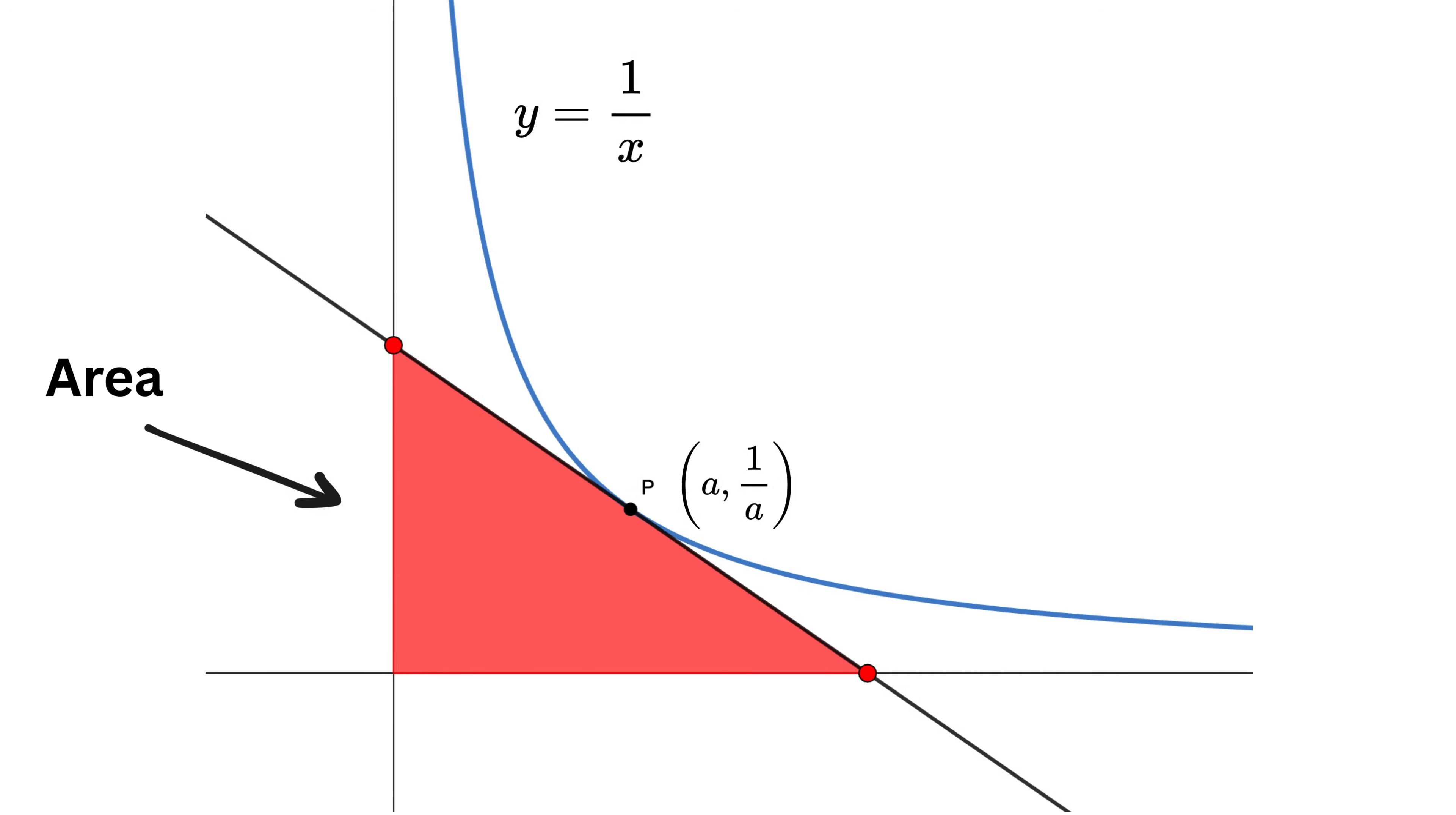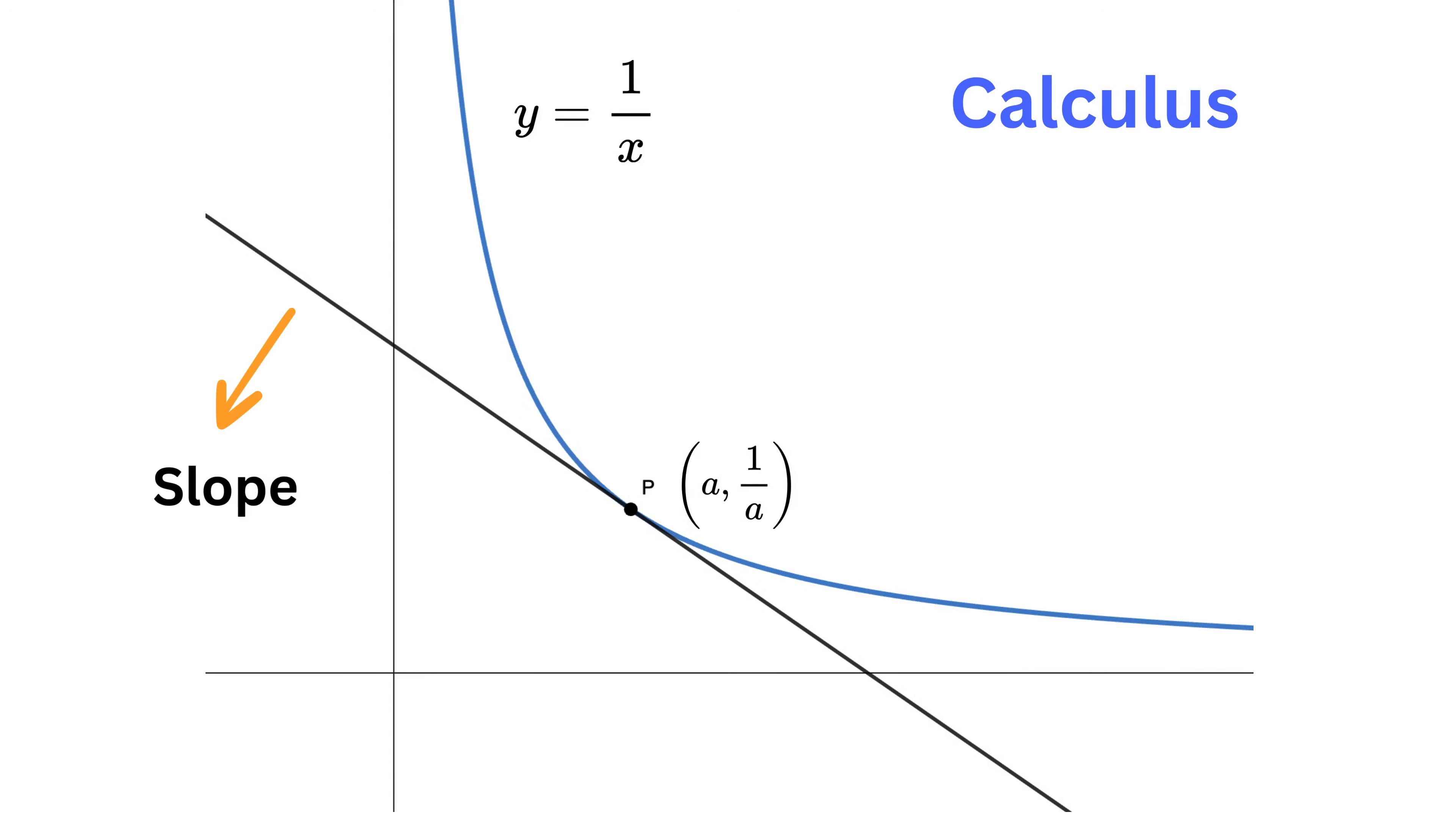Our goal is to find the area of this triangle. To do that, as a first step, we will use calculus, which will help us find the slope of the tangent and the points where it meets the axes. Do you know how we find the slope of this tangent? In calculus, this slope is found using derivatives.